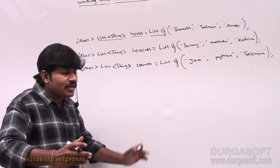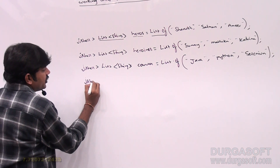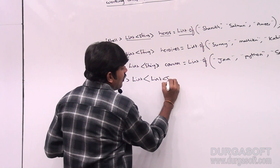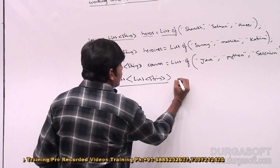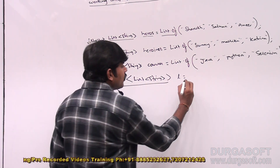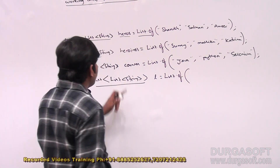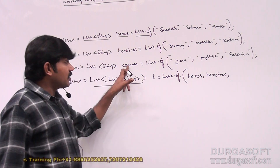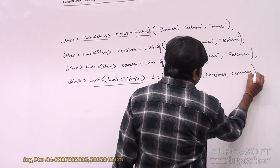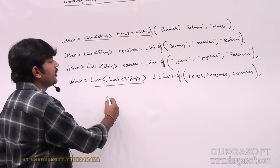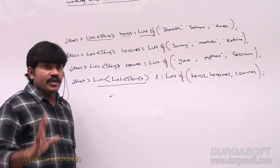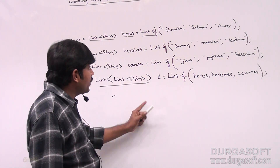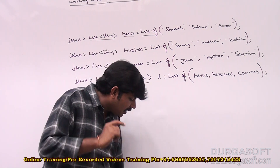So how many list objects do I have? First list, second list, third list. I want to add these three lists into one combined list. From JShell: List<List<String>> l = List.of(heroes, heroines, courses). The first one is heroes, the second is heroines, the third is courses. A complex list is created by default. This shows you can create any variable in normal Java — all those variables you can create in JShell also.